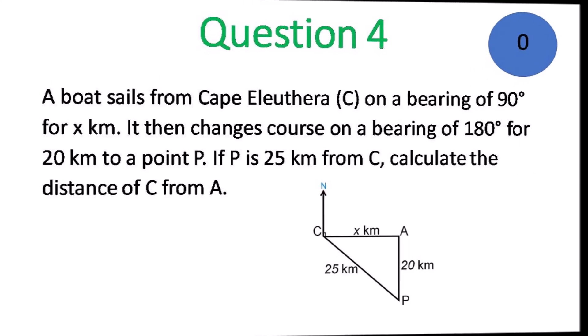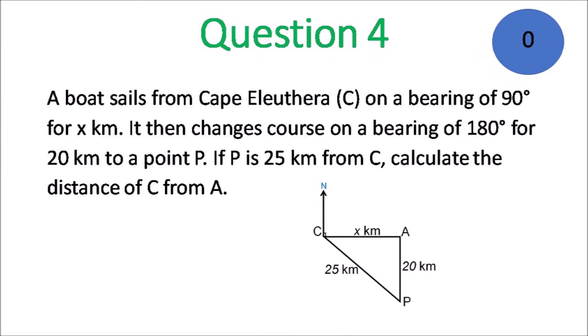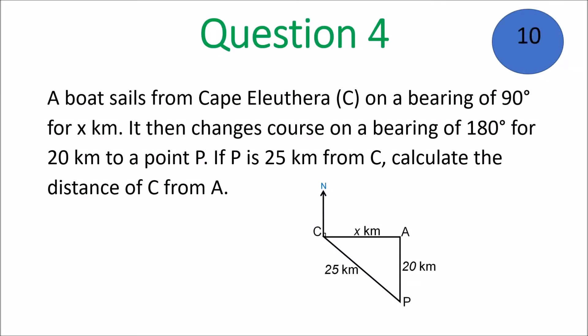Question 4. A boat sails from point C on a bearing of 90 degrees for x kilometers. It then changes course on a bearing of 180 degrees for 20 kilometers to a point P. If P is 25 kilometers from C, calculate the distance of C from A.